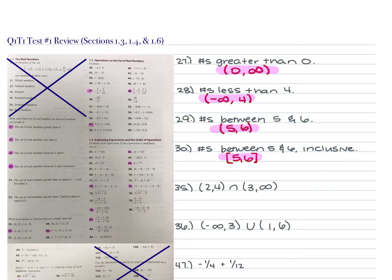For numbers 35 and 36, we are writing the set of intervals as a single interval. Look at what's the smallest number and what's the largest number. If it's an intersection, the overlapping numbers get brackets because they include the same numbers. If it's a union, pay attention to what you're working with. If it's negative infinity or positive infinity, it gets parentheses. If it's an actual number, whatever bracket or parenthesis it already has, it keeps.